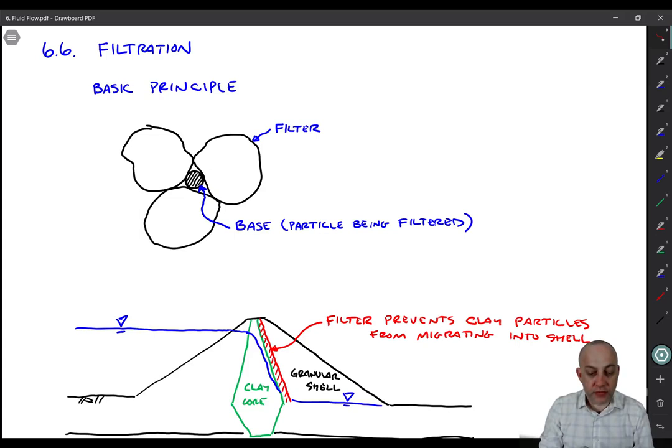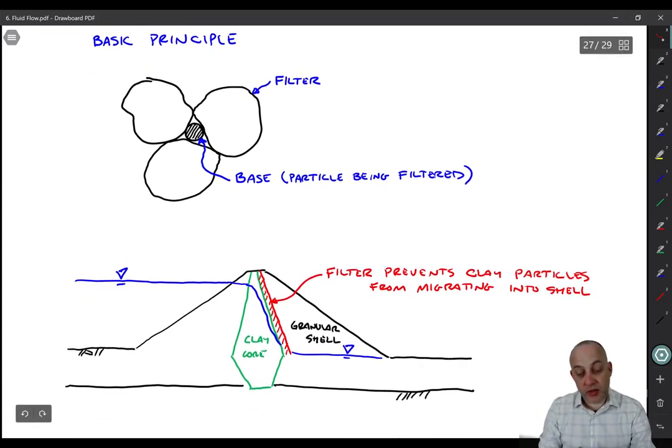So you might be wondering, when do we use these filters? A classic example is that we put filters on the downstream side of the core of earth dams. So here we have an earth dam embankment. Here's the reservoir. And all of the head loss is going through this clay core.